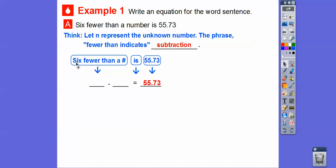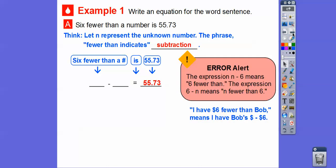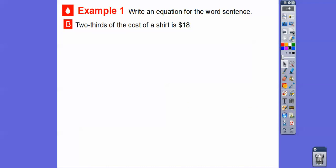Subtraction kind of works backwards, you guys. When it says 6 fewer than N, the 6 goes here. And so here's the general rule right here. The expression N minus 6 is 6 fewer than. So if I say, for example, I had 6 fewer dollars than Bob, then that would mean I would have whatever Bob's money is minus 6. So 6 fewer than means we're going to write it as N minus 6. The expression 6 minus N means N that's fewer than 6 right there. So we're going to do 6 fewer than N is going to be N minus 6. So subtraction kind of works a little bit backwards on that.